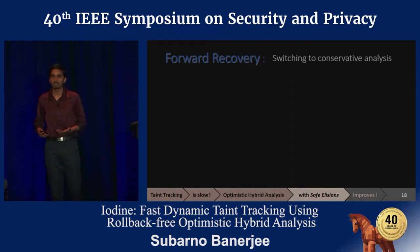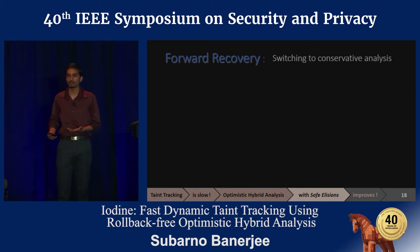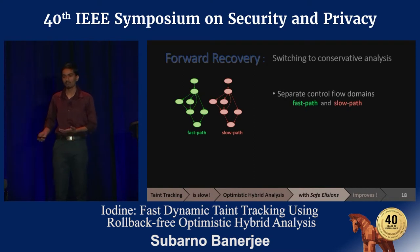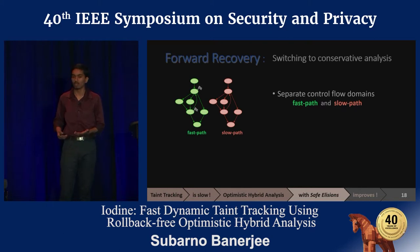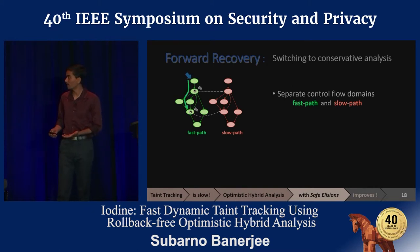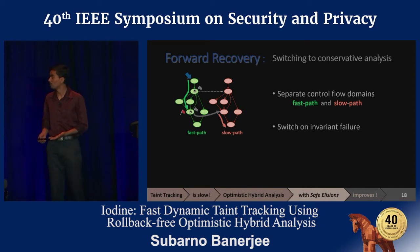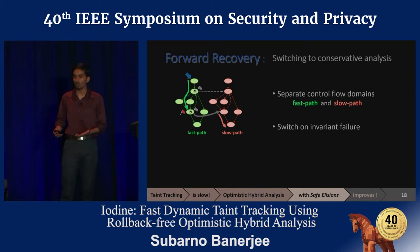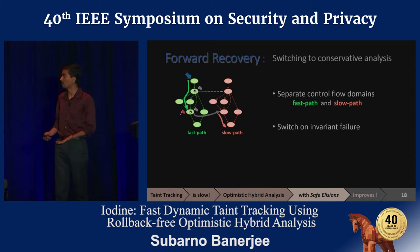The forward recovery mechanism essentially needs to reactivate the monitors that were optimistically elided. We have two versions of the program instrumented in separate control flow domains: the fast path with the optimistic analysis and the slow path with the conservative analysis. Execution begins in the fast path domain, and upon an invariant violation simply switches to the conservative slow path and continues forward. This switching is safe because the two versions only differ in their analysis logic, and safe elisions guarantee the correct metadata state at the point of invariant failure.